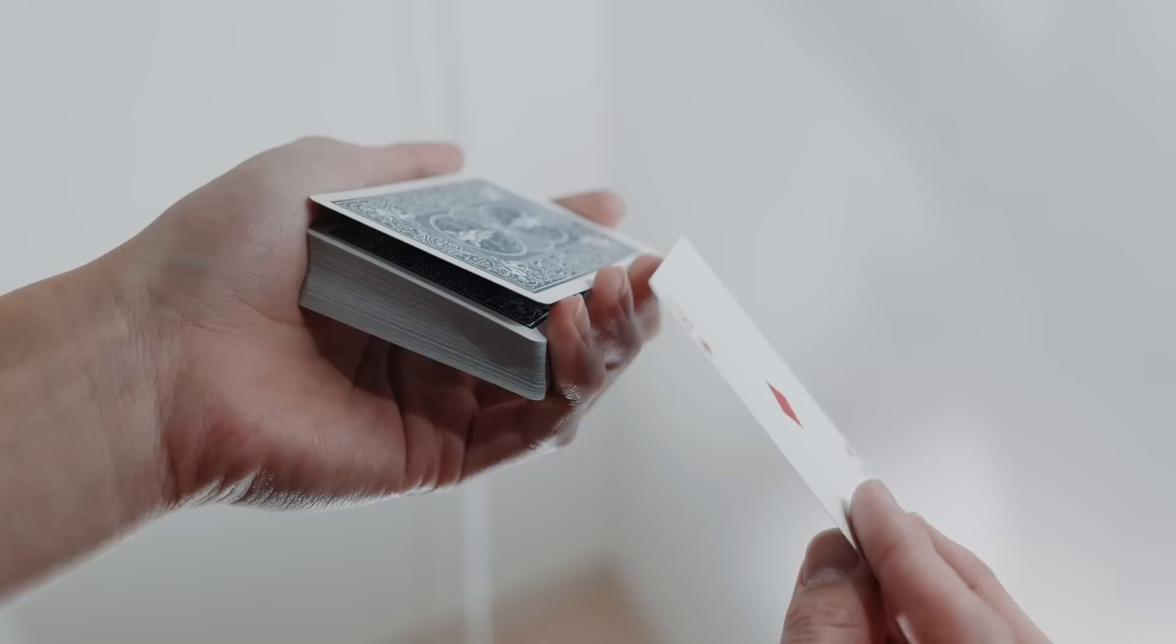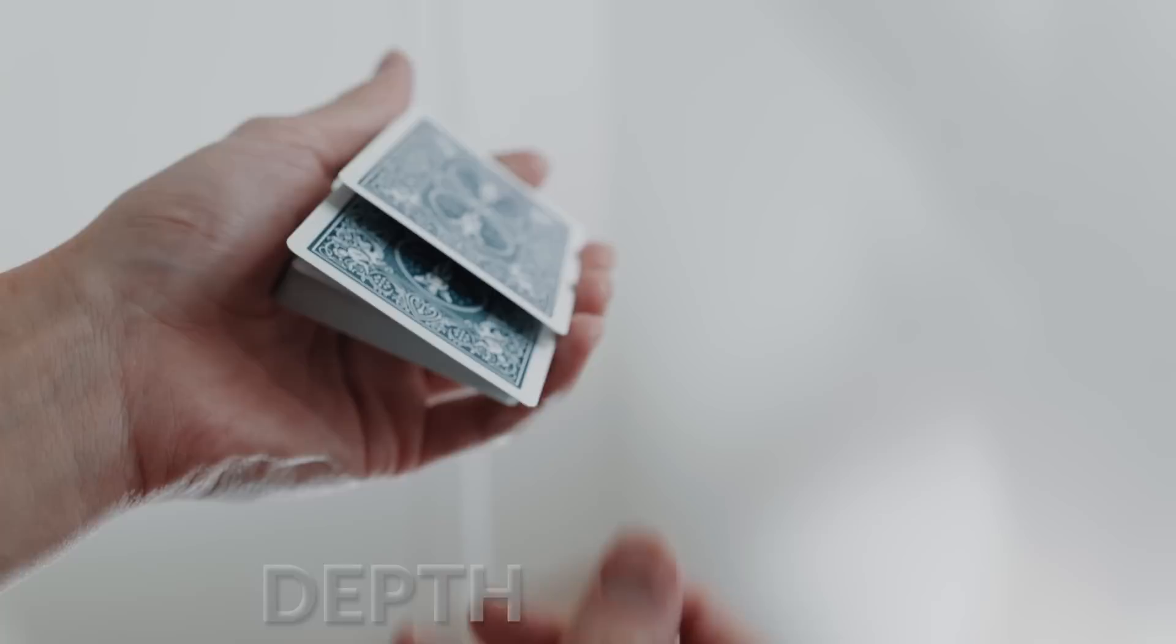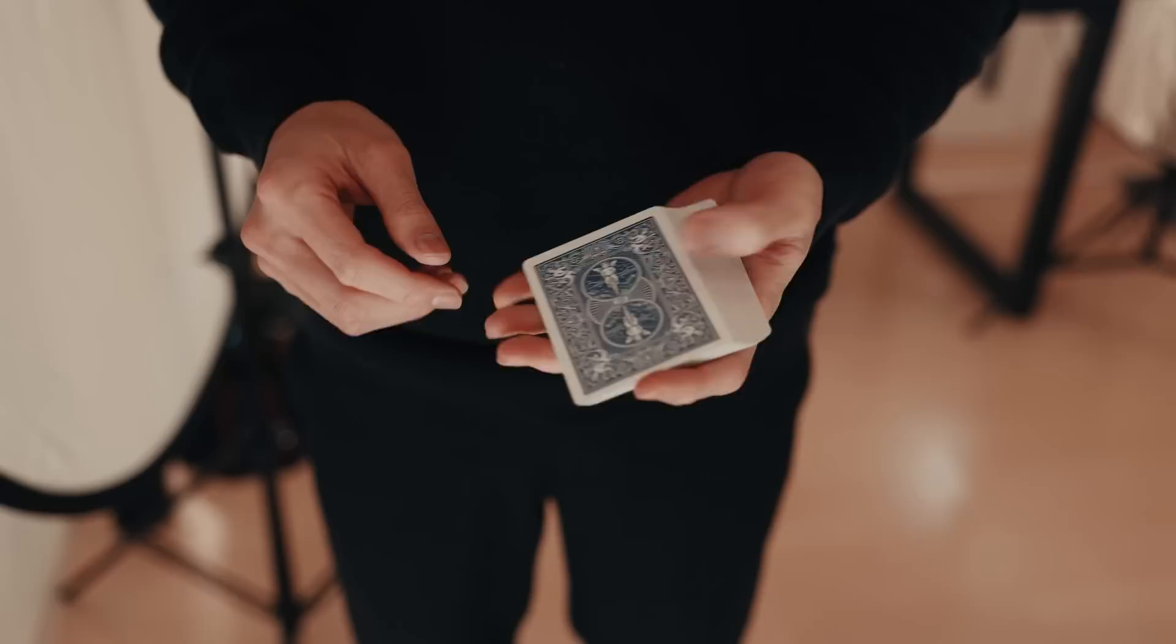Now we need to learn this move. It looks like you're putting the card back into the middle of the deck, when in reality it's going third from the top, and this is called the depth illusion or the tilt. Let me show you three different versions of the move and then I'll teach you how to actually do it.